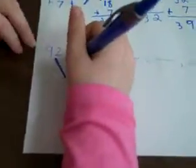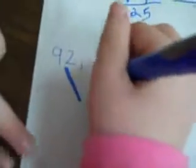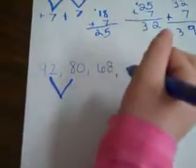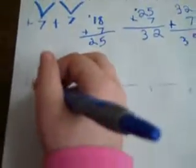Now I have to find the rule for the pattern of 92, 80, and 68. And I can tell that we're subtracting.